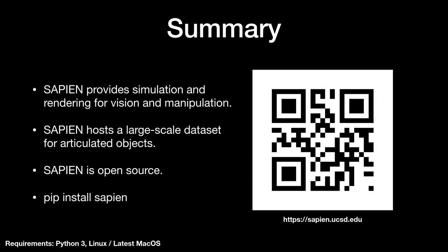To summarize, Sapien provides simulation and rendering for vision and manipulation tasks. Sapien hosts a large-scale dataset for articulated objects. And the best part about Sapien is that it is completely open source. For more information, please visit our website.